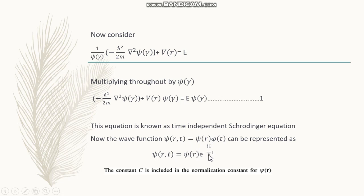Here, the phi of t is a constant, e raised to minus i E by h-cross. The constant C is included in the normalization constant for psi of r.